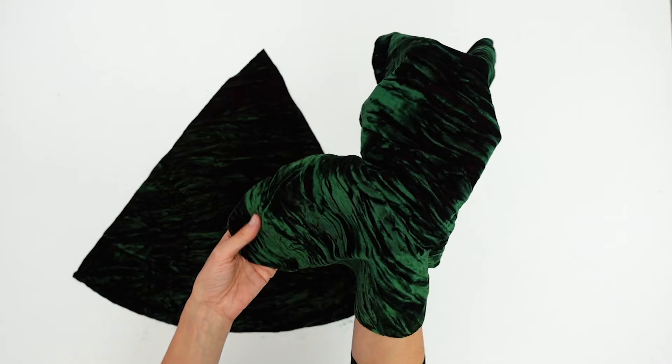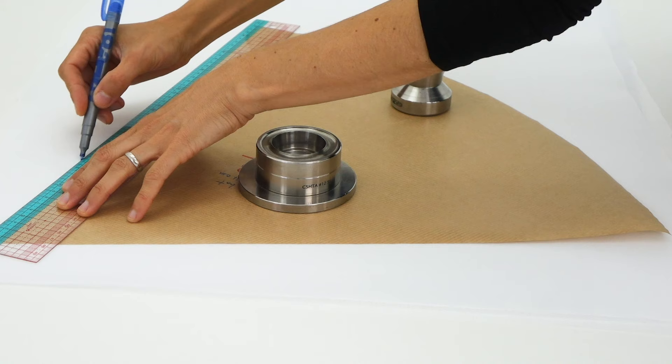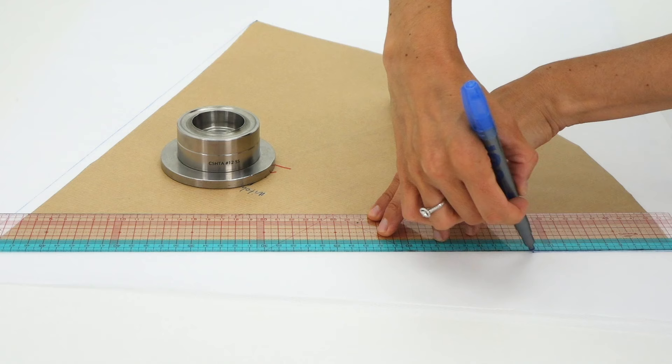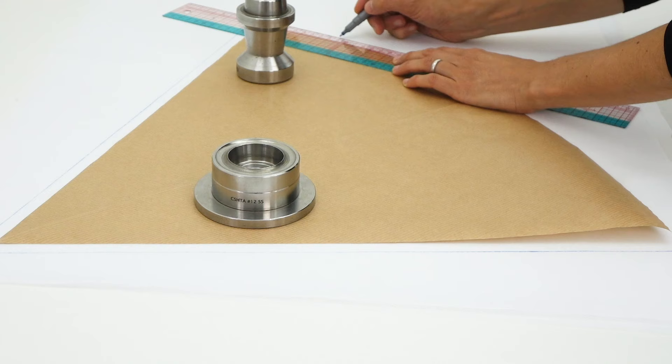We will cut this piece 3 times, once in the main fabric, my gorgeous velvet that I love with all my heart and once in a fusible or any kind of interfacing to add firmness.